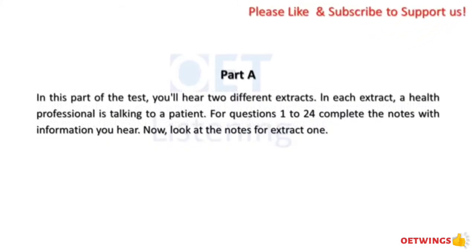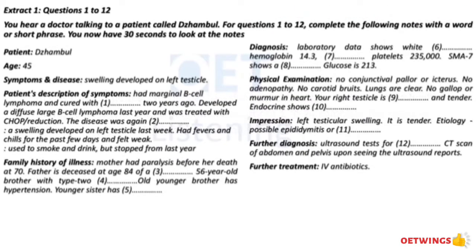Part A. In this part of the test you hear two different extracts. In each extract a health professional is talking to his patient. For questions 1 to 24, complete the notes with the information you hear. Now look at the notes for extract 1. Extract 1, questions 1 to 12. You hear a doctor talking to a patient called DeChambelle. For questions 1 to 12, complete the following notes with a word or short phrase. You now have 30 seconds to look at the notes.